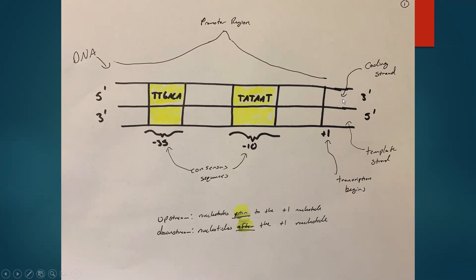The top strand, which is not being copied into RNA, is known as the coding strand. The bottom is the template strand, which is being copied into RNA. Upstream refers to nucleotides prior to the plus one nucleotide, which is the stuff off to the left, and downstream would be after the plus one nucleotide to the right.